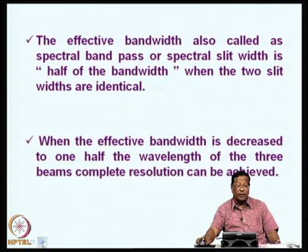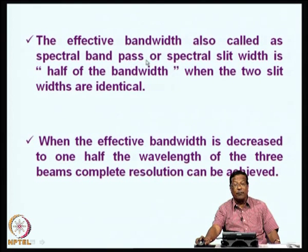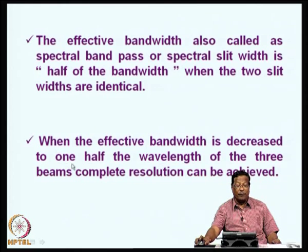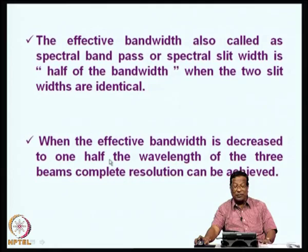The effective bandwidth is also called spectral band pass or spectral slit width. It is half of the bandwidth when the two slit widths are identical — it is very important that two slit widths should be identical, otherwise you will not have a good spectrum. When the effective bandwidth is decreased to one half the wavelength of the three beams, complete resolution can be obtained. Otherwise, there will always be bunching of the radiations, and it would not give you spectral purity.